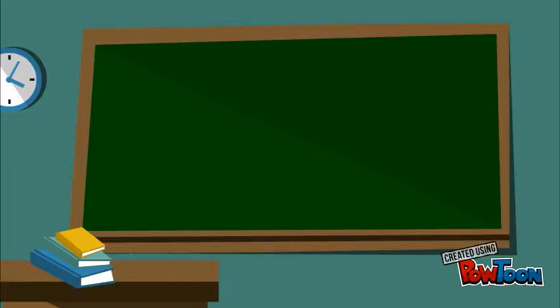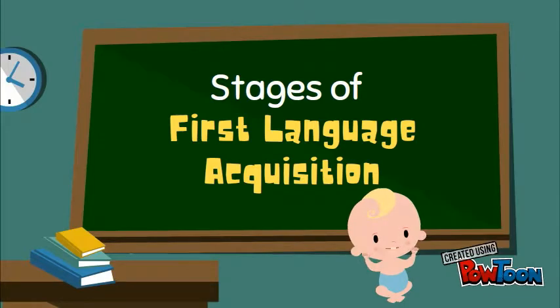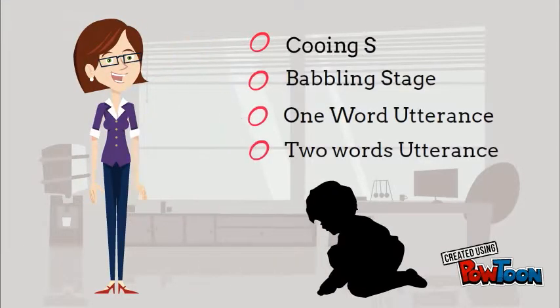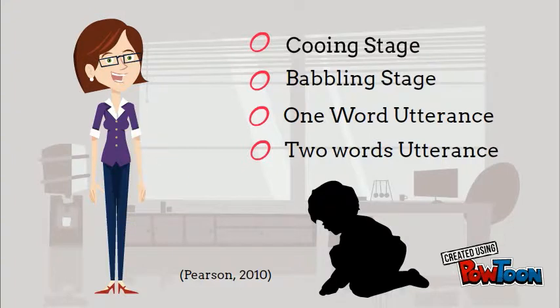Next, we shall move on to the stages of First Language Acquisition. The stages consist of cooing stage, babbling stage, one word utterance and two word utterance.